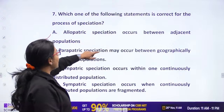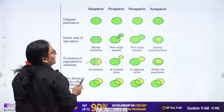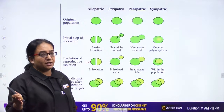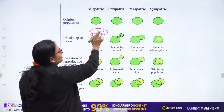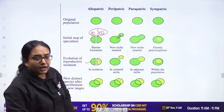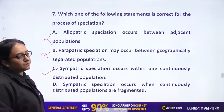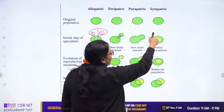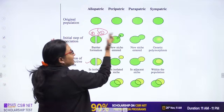The question asks which statement about speciation is correct. Option A — 'parapatric speciation occurs between geographically separated populations' — is wrong; that is allopatric. Option B — 'occurs between adjacent populations' — is also not correct for allopatric. Option C — 'sympatric speciation occurs within one continuously distributed population' — is absolutely correct. So option C is the right answer.